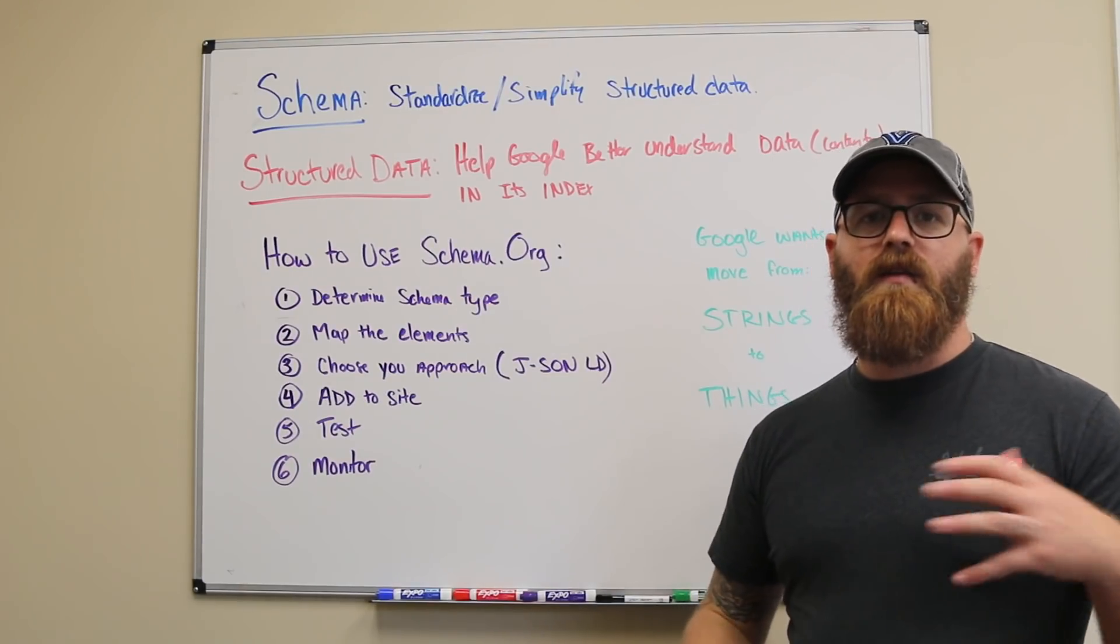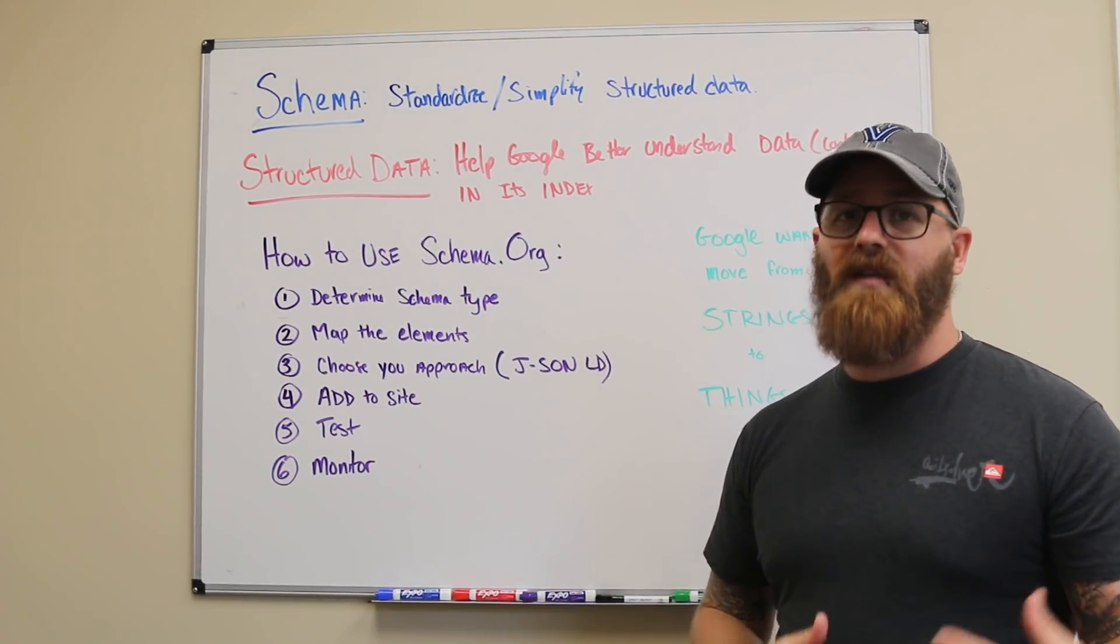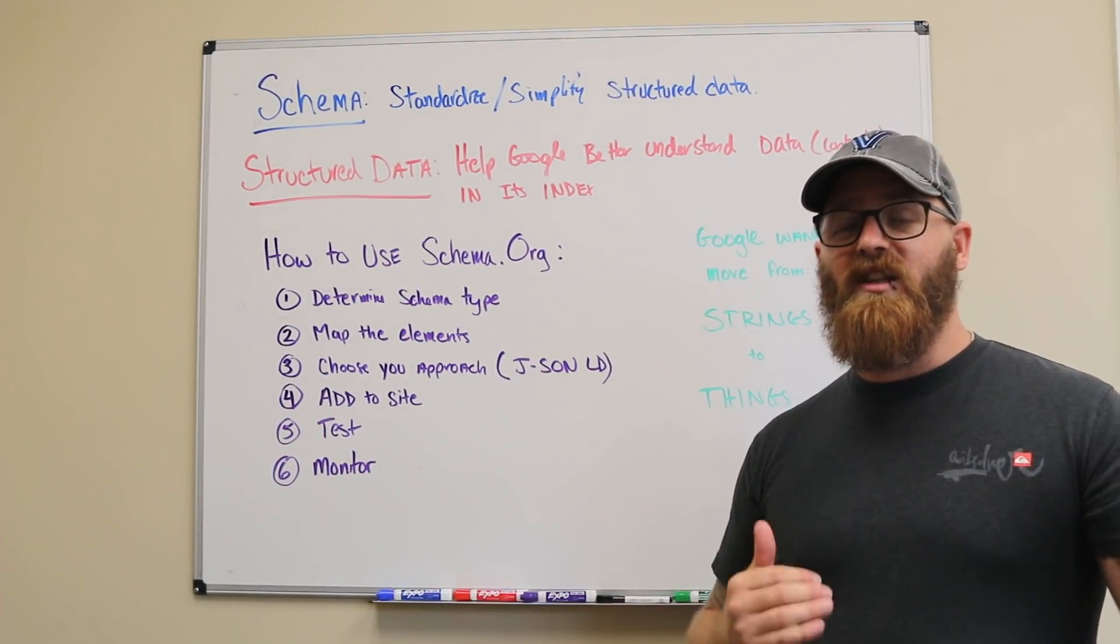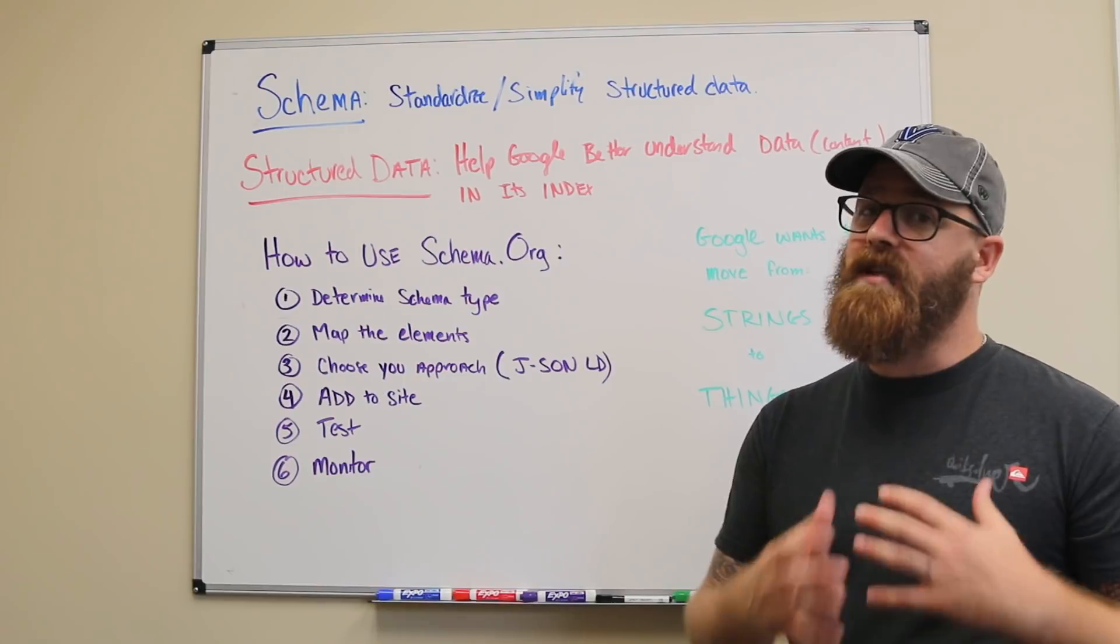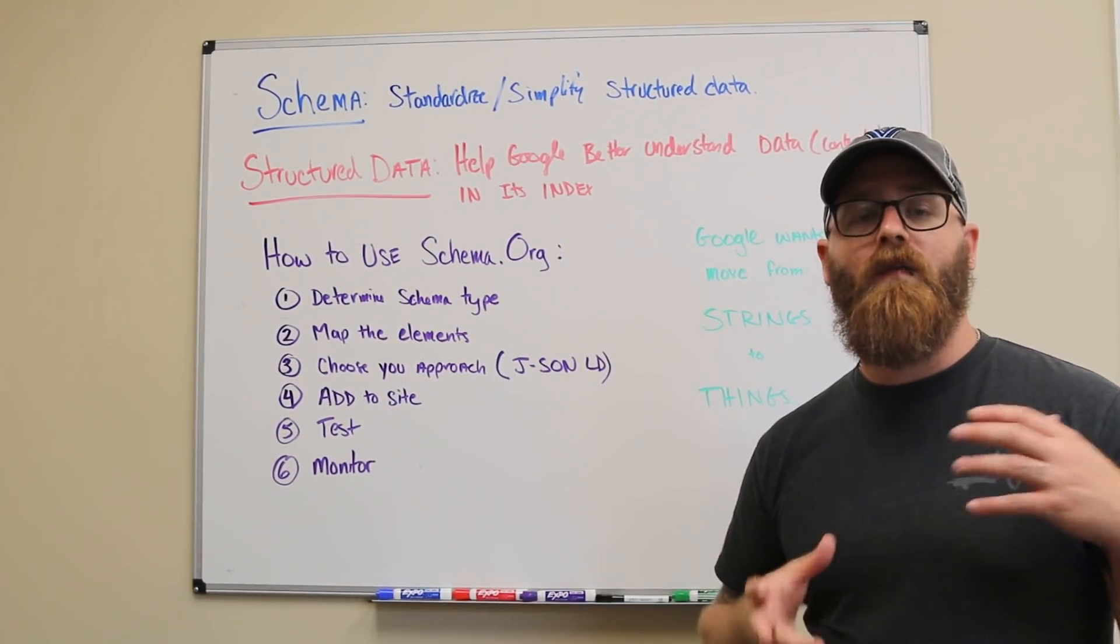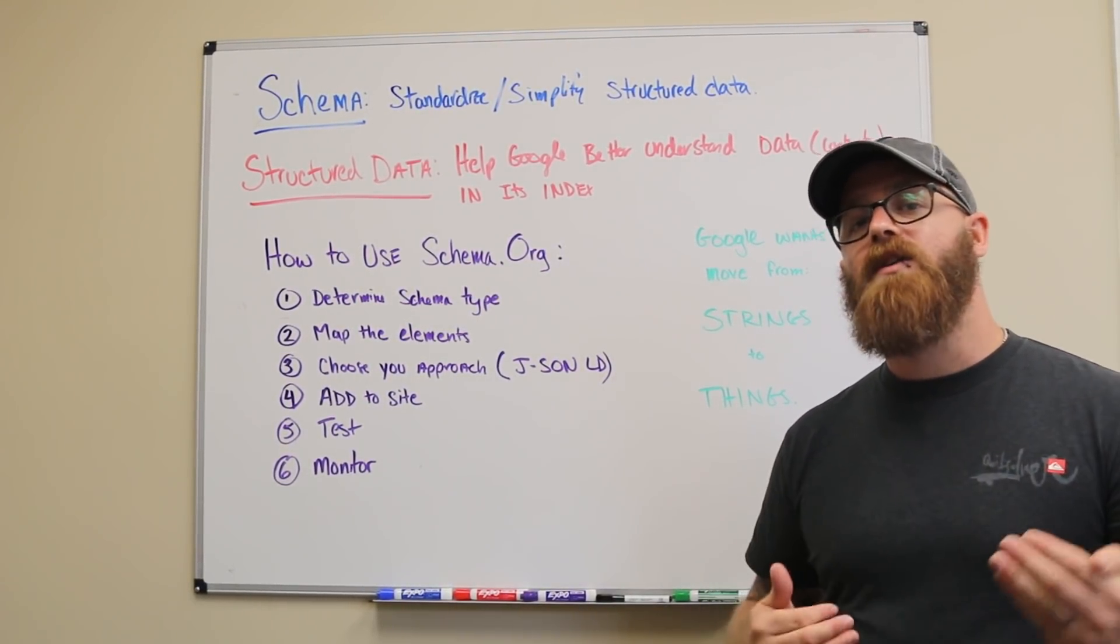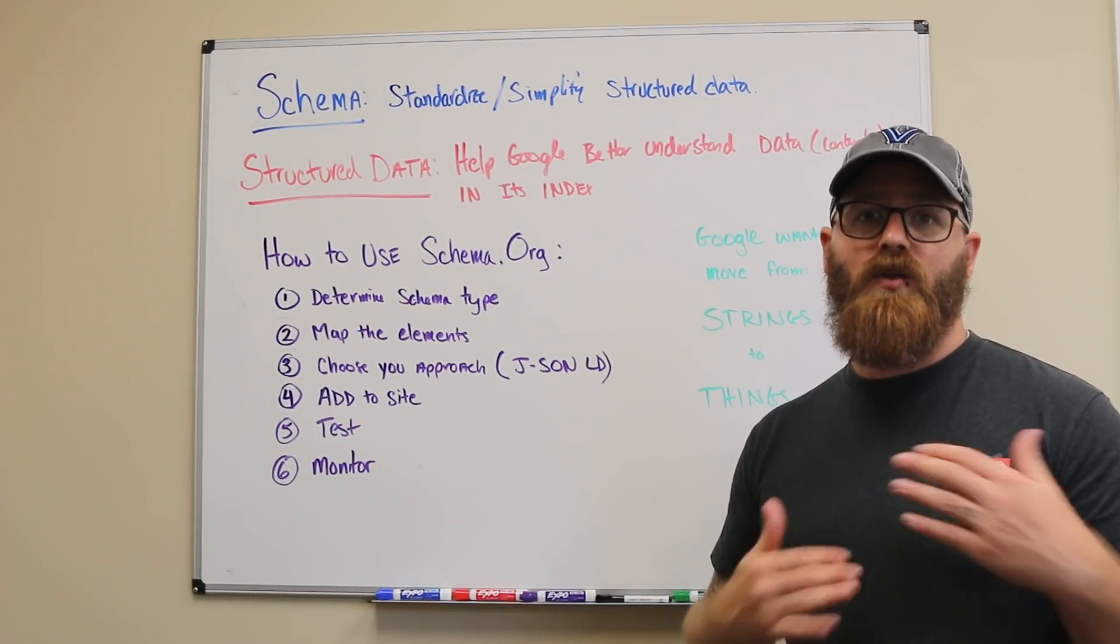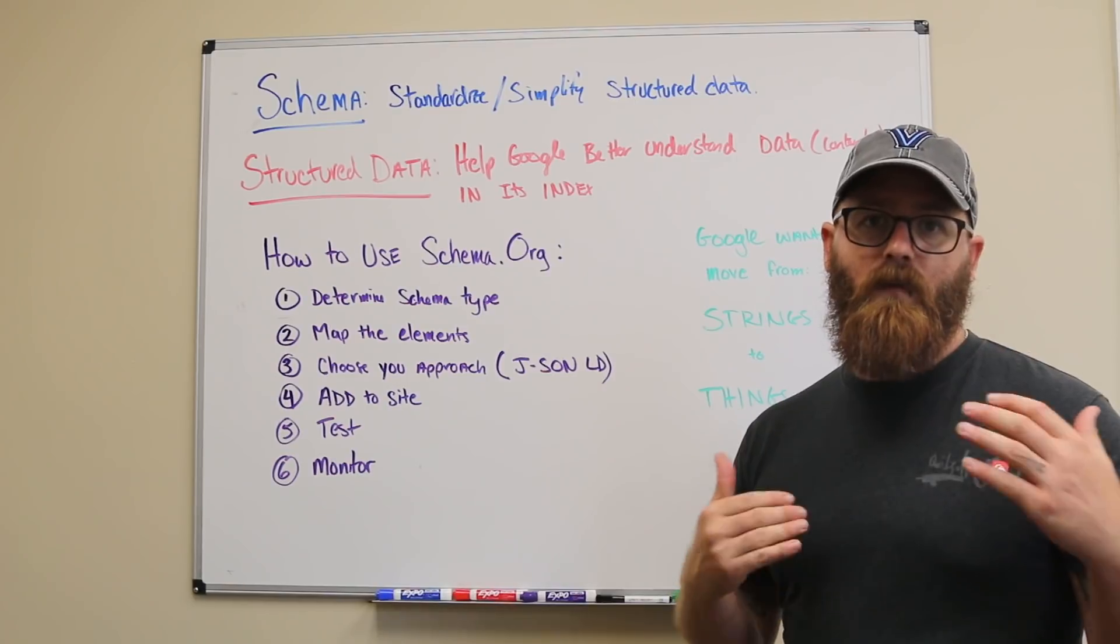So after you've defined the types of schema you want to be using, the next step is to map out how you're going to structure this data. As you can see, there's a lot of different options under some of these different types and you may not have all the content. So you don't want to force it, but you do want to provide as much information as possible. So here's an example of how we might want to map out a certain element using schema markup.